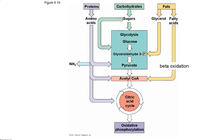Fats have a lot of carbon-hydrogen bonds — each of those bonds in that huge long tail holds electrons. So every carbon and every hydrogen you break off is going to release electrons, which is why fats have so much energy in them, and also why it's harder to get rid of adipose tissue — fat tissue.